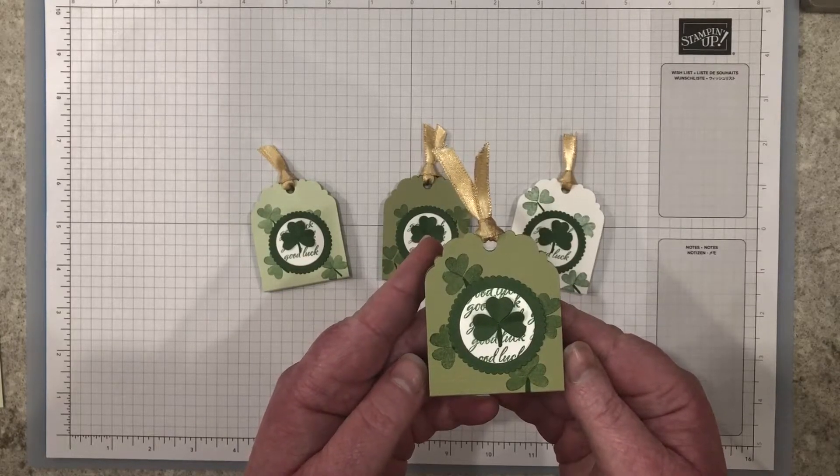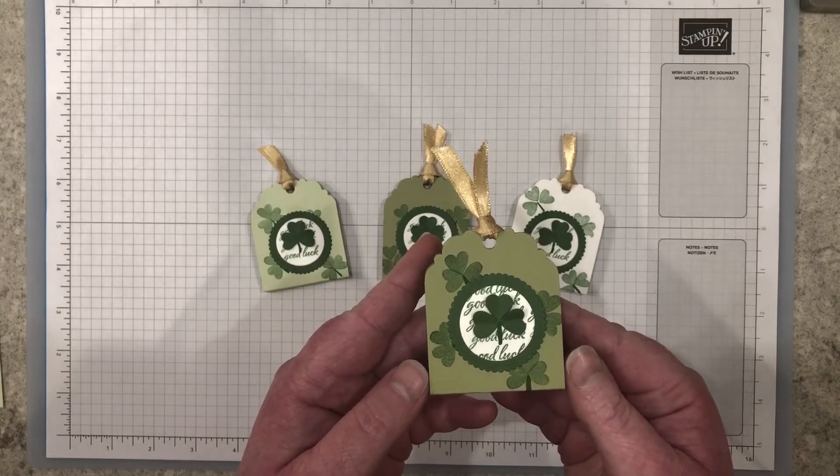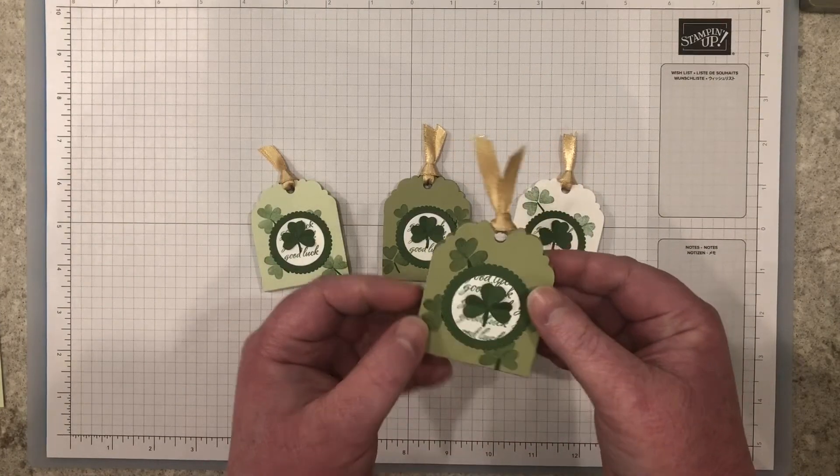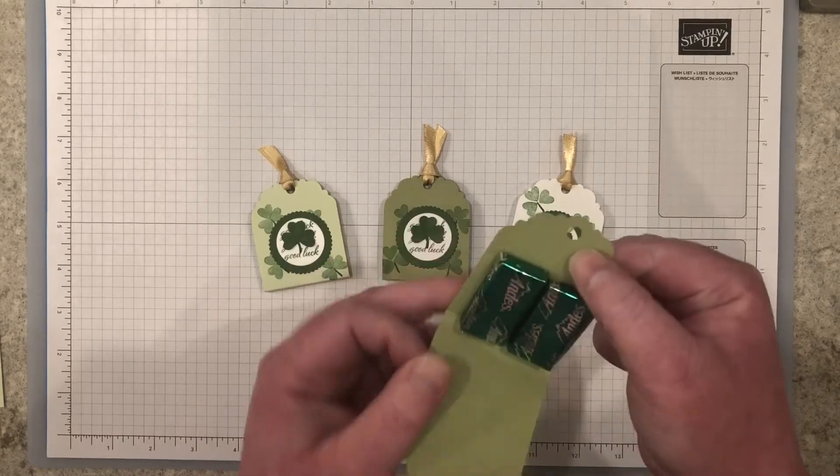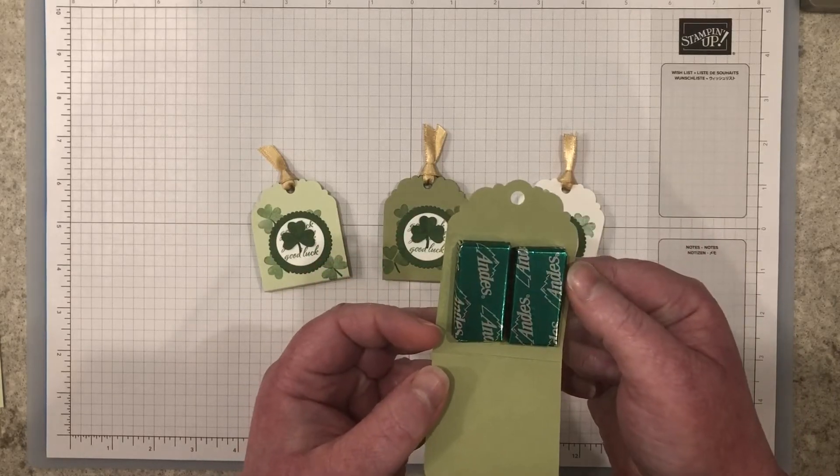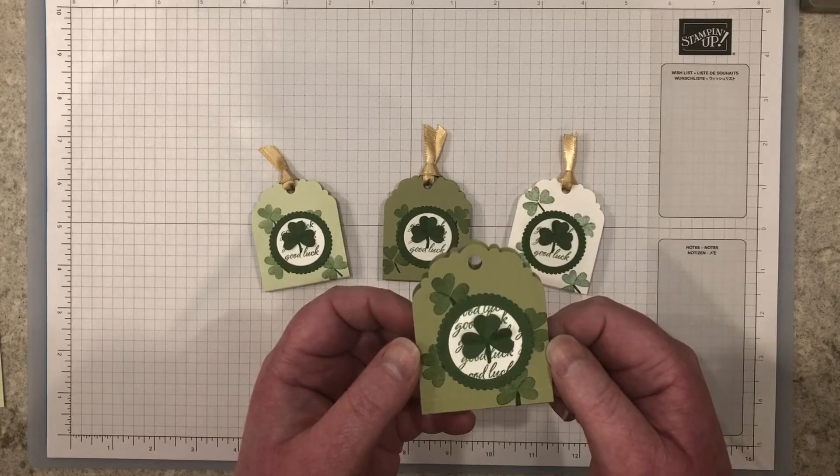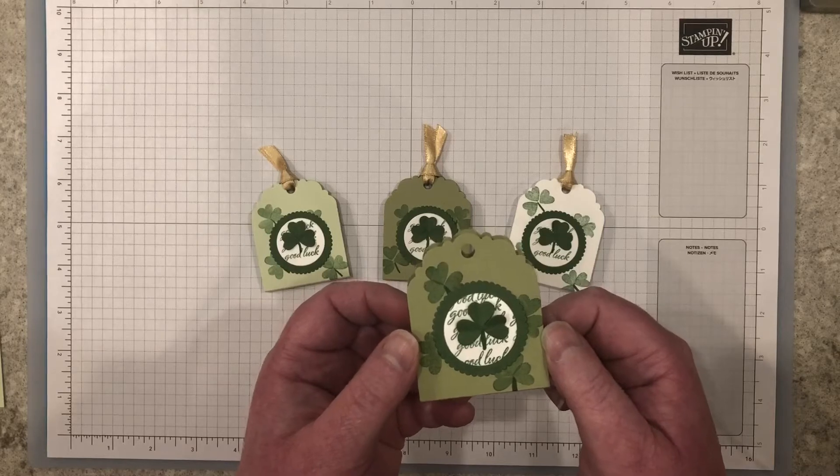Today's project is a St. Patrick's Day treat holder using the delicate tag topper punch. The outside is decorated with shamrocks and the inside has mint chocolate candy pieces. I'll show you how quick and easy this treat holder comes together in almost no time. Let's get started!